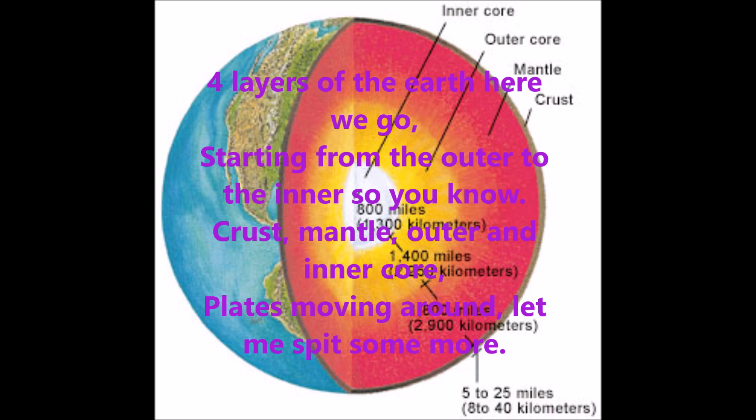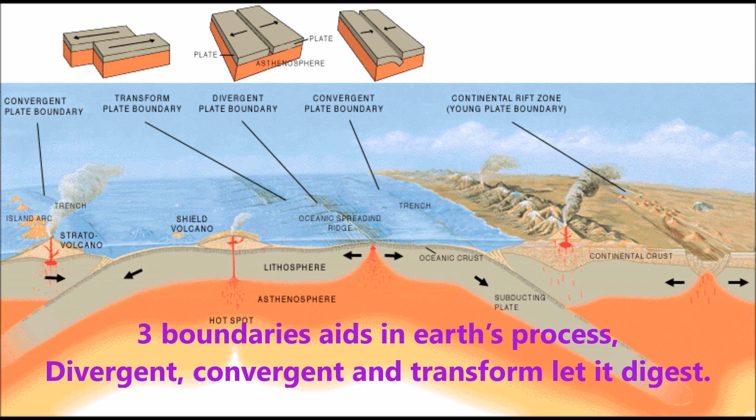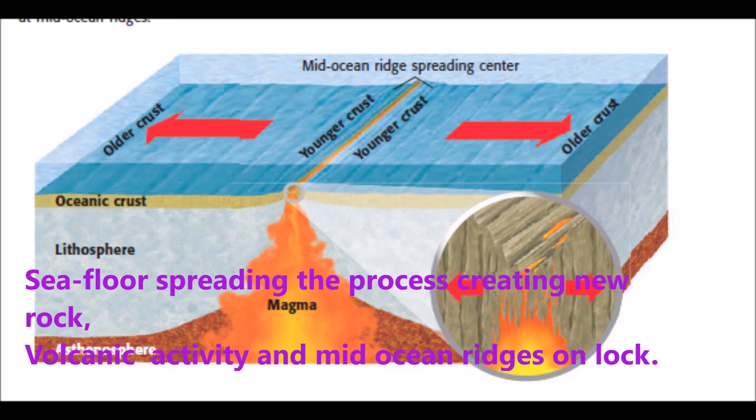Four layers of the earth, here we go — crust, mantle, outer and inner core, plates moving all around. Three boundary types aid in earth's process: divergent, convergent, transform — let it digest.